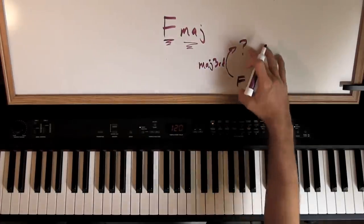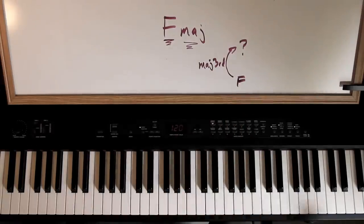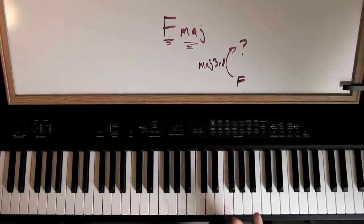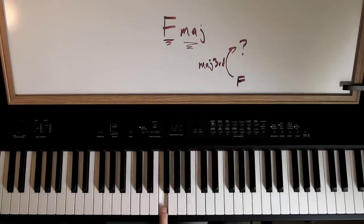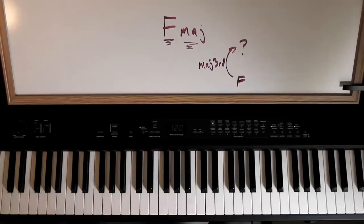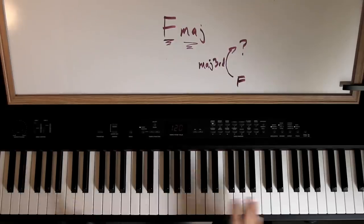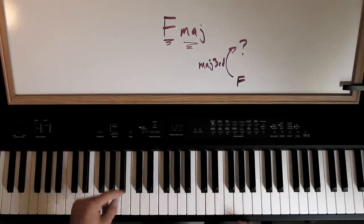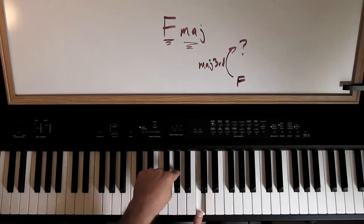A major third is two whole steps — that's the definition, like a foot is 12 inches. It doesn't matter what instrument you're on or where you start; it's always the same. You could start on A, go up two whole steps, and there's a major third. Start on A flat, go up two whole steps, same thing. You don't really want to have to count through this every time — you want to just be able to see those two whole steps quickly. Spend a little while finding major thirds starting on random notes until it becomes easy.